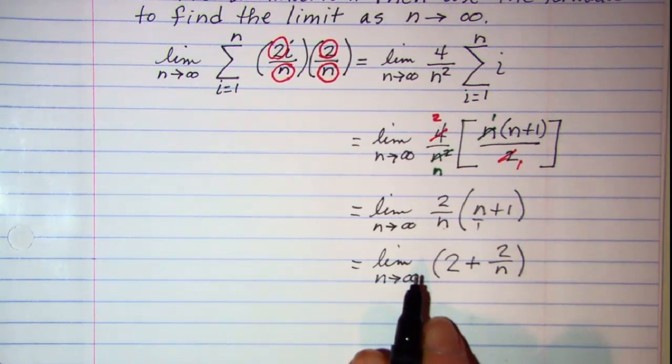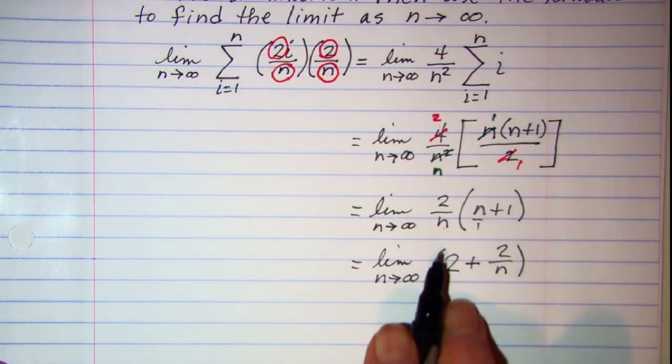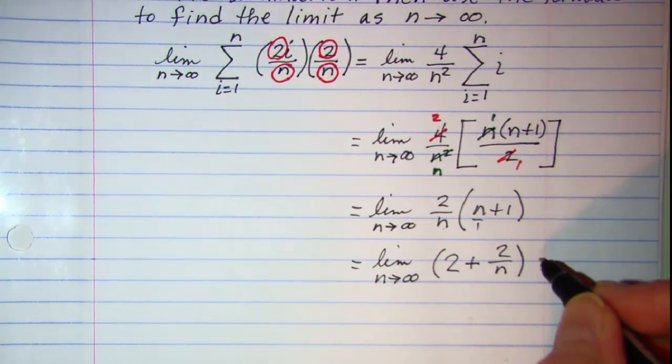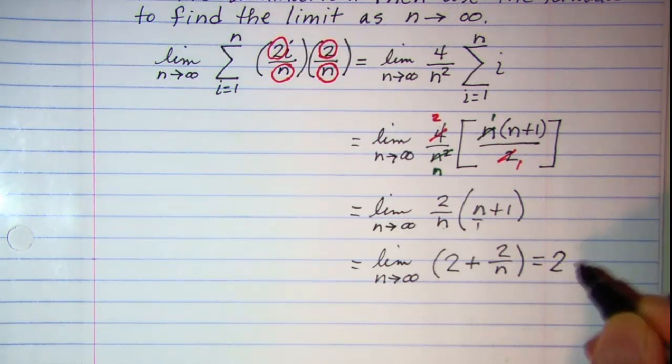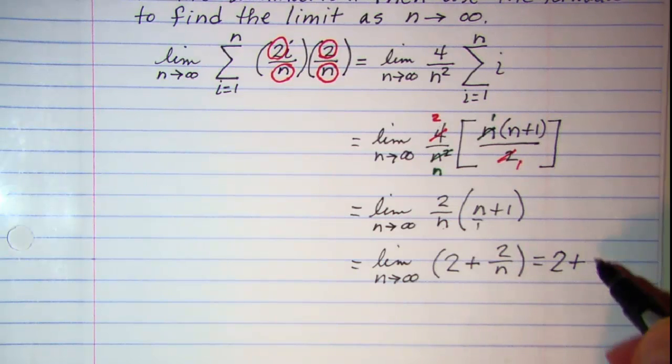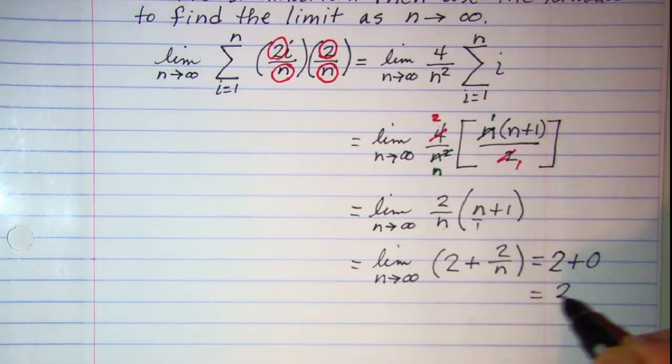Now I'm ready to take my limit as n approaches infinity. The limit as n approaches infinity, remember, is 0 when my n is in the denominator. So I have 2.